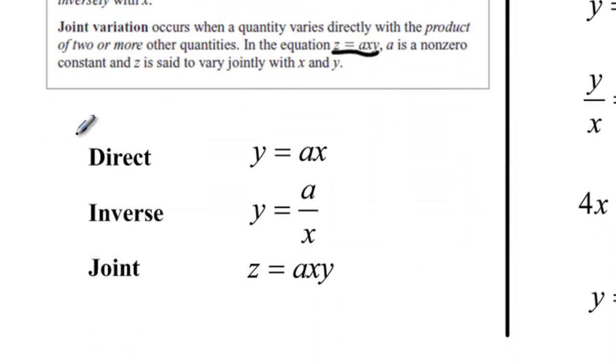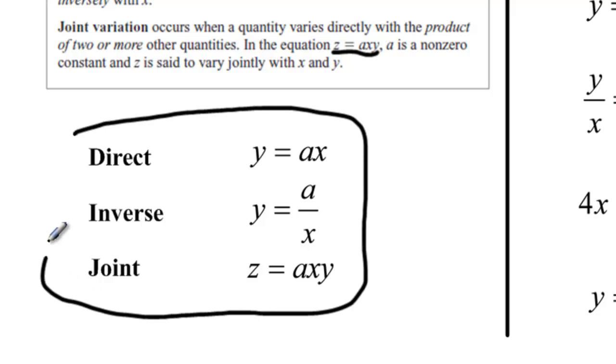So down here you're going to see that we have some definitions or at least some forms for direct variation, inverse variation, and joint variation. The biggest thing is, can I get it into this form? If so, then it will be direct, inverse, or joint and if I can't, it won't be any of those.